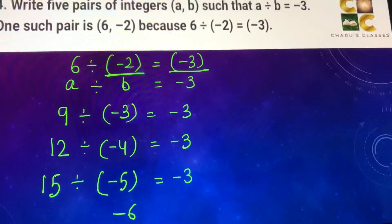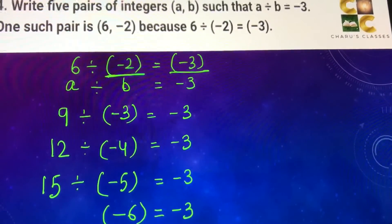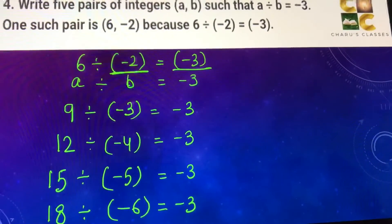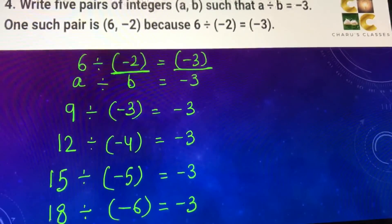Another one, if I take minus 6, minus 6 into minus 3 that is 18. So I can have 18 divided by minus 6 equal to minus 3.